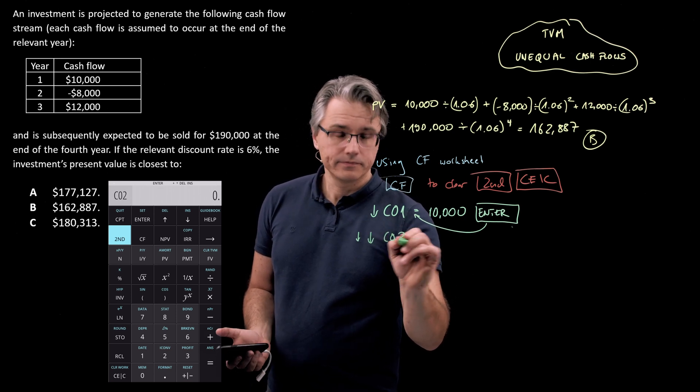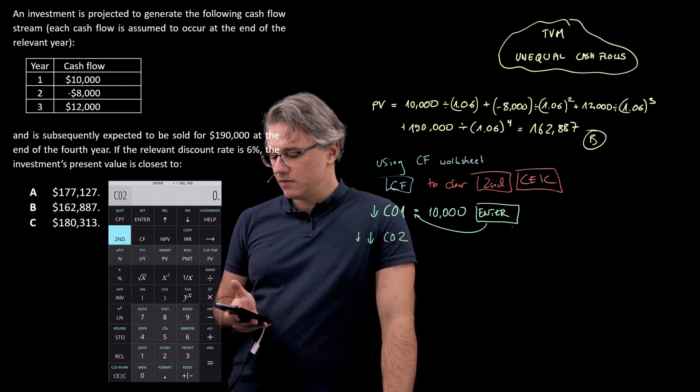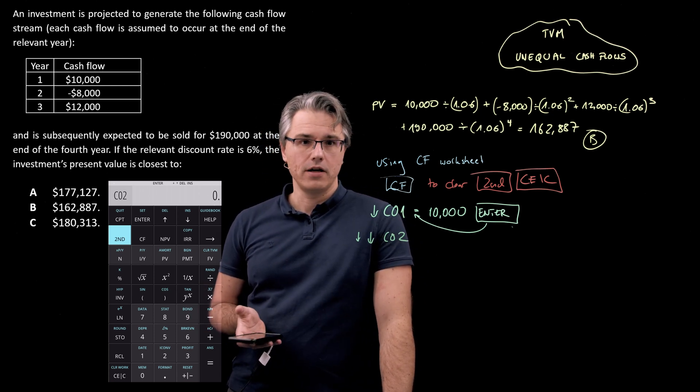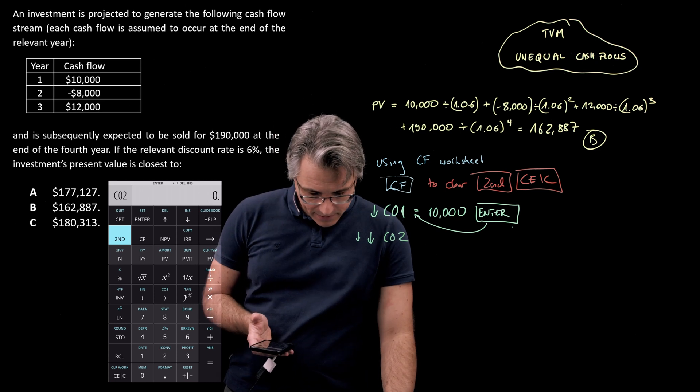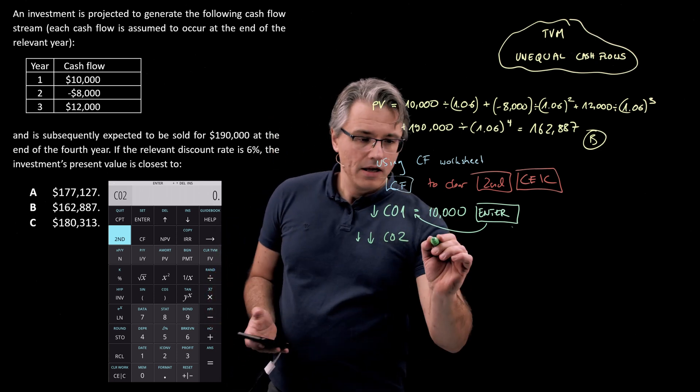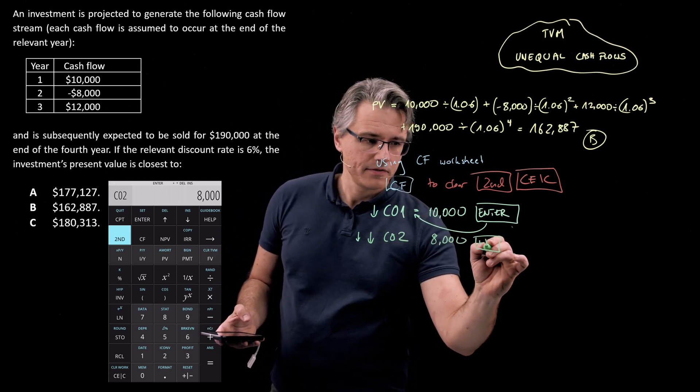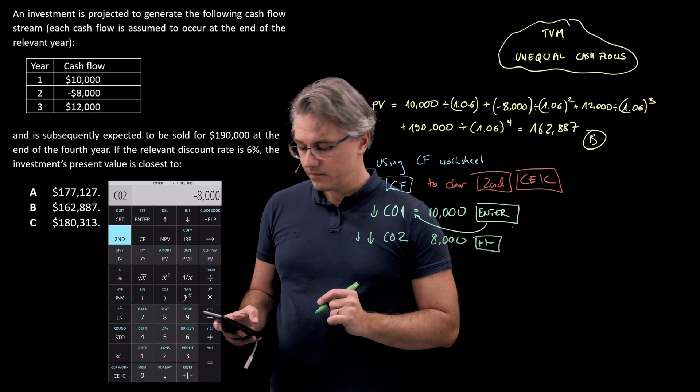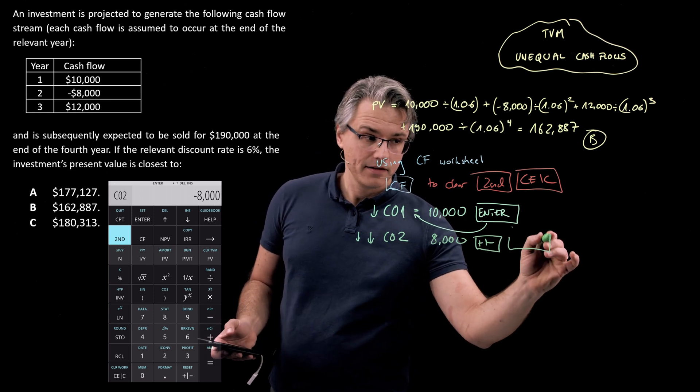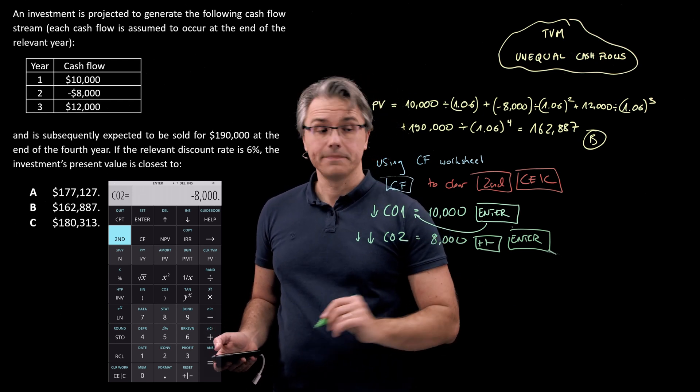And as you can see, we are displayed – we see a C02 displayed over here. And we'll want to make this equal to 8,000, but negative. So, 8,000, follow this up with the plus-minus key to turn this into a negative figure, but once again, finishing with Enter, which puts an equal sign here.